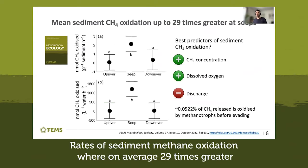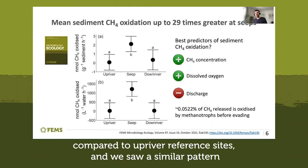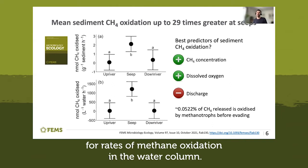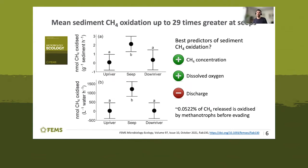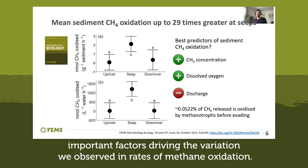Rates of sediment methane oxidation were on average 29 times greater at the seep sites compared to upriver reference sites, and we saw a similar pattern for rates of methane oxidation in the water column. Methane concentration of the water column, dissolved oxygen, and discharge were all important factors driving the variation we observed in rates of methane oxidation.